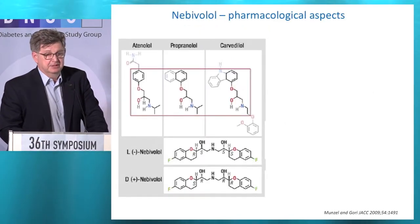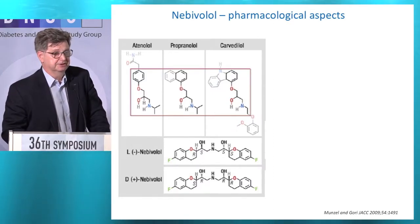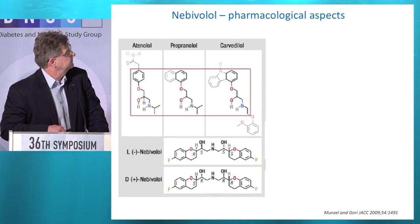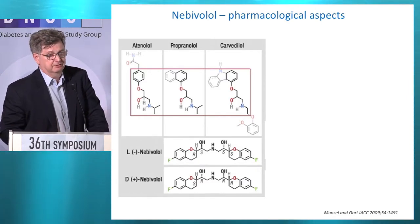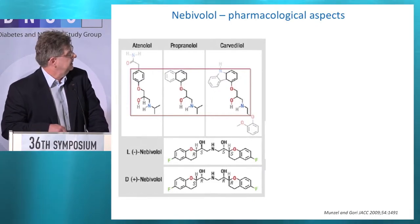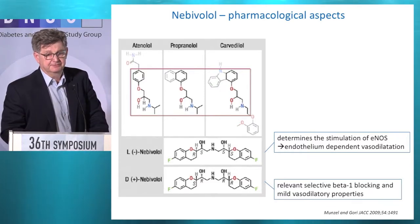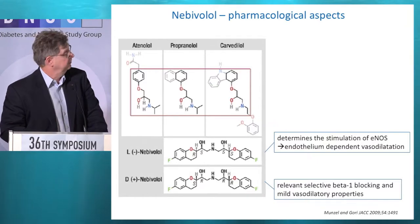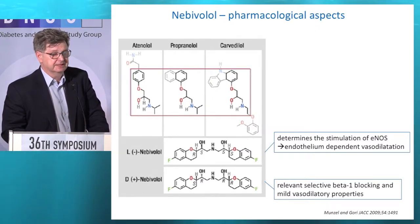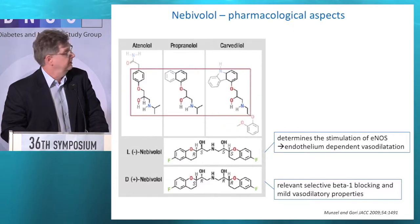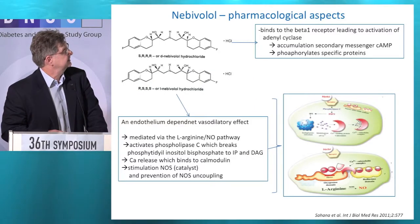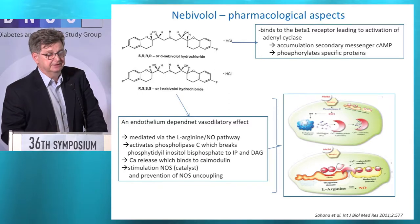There are differences within the beta-blocker class. One particularly interesting beta-blocker when speaking about endothelial function is nebivolol. Nebivolol has two isomers, L and D. The D-nebivolol isomer is related to classical beta-blocker effects. But the L-nebivolol isomer stimulates eNOS directly — and this is related to the results reported with nebivolol on endothelial-dependent vasodilatation. This is the part of nebivolol which acts directly on the endothelium and increases NO synthesis.